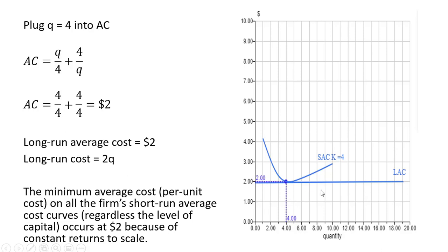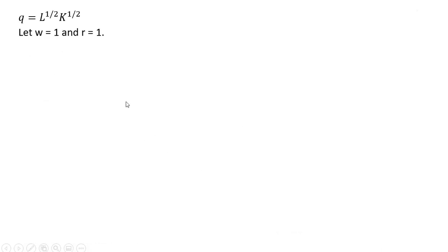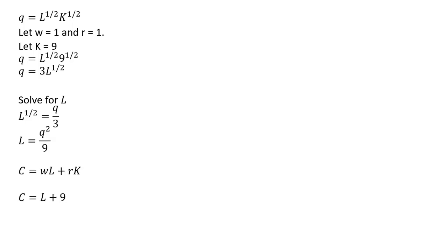Let's find another short-run average cost curve for this firm. So we're essentially going to do the same thing. But this time, let's pick a slightly larger plant size, larger scale of operations. This time, K equals 9. Plugging 9 into the production function and simplifying. As before, solving for L, squaring both sides, setting up the cost function, making our substitutions.